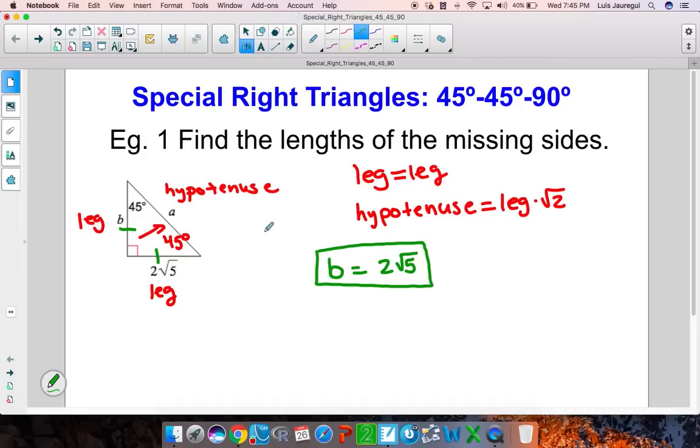On the other hand, hypotenuse. Using this particular relationship, I can say that the hypotenuse in this case, it's labeled as a, is equal to the leg times the square root of 2. So in this case, the leg measures 2 times the square root of 5. So let me go ahead and substitute that in there, times the square root of 2.